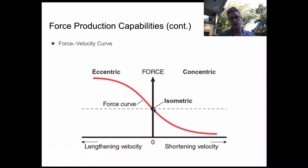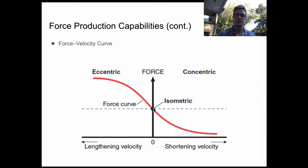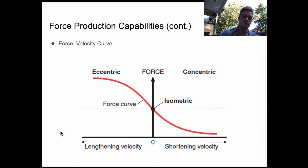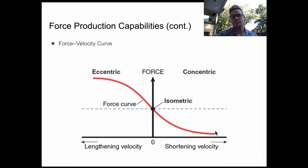As we move higher up from the isometric line, we have increasing force, and anything below that is decreasing force. What this graph essentially demonstrates is that as we get more velocity heading in a lengthening direction, we actually increase in the force-velocity capacity of our muscles. As the muscles get shorter, we decrease in the capacity to produce force concentrically — and again, that's with speed.